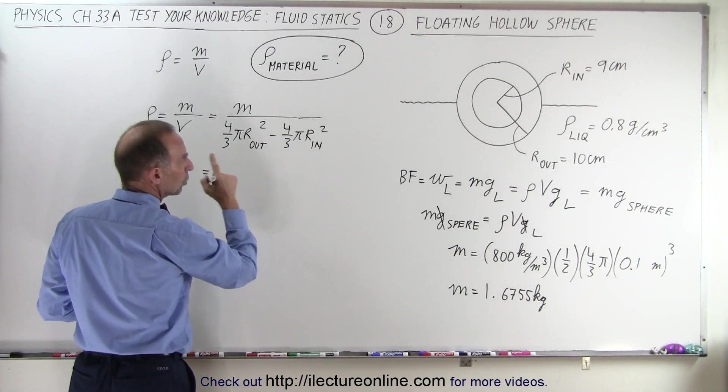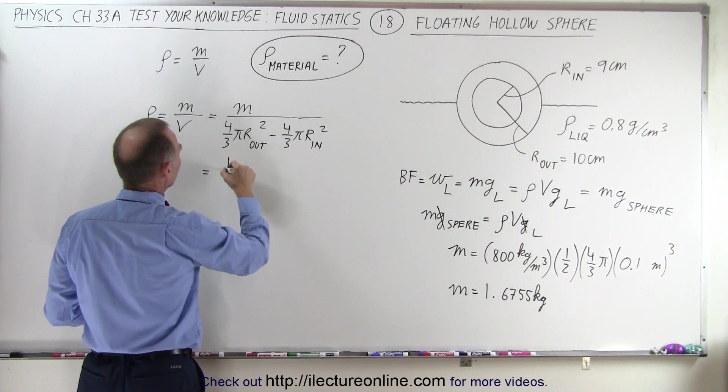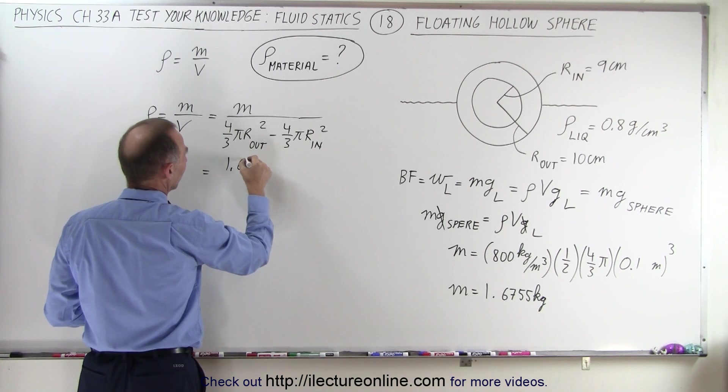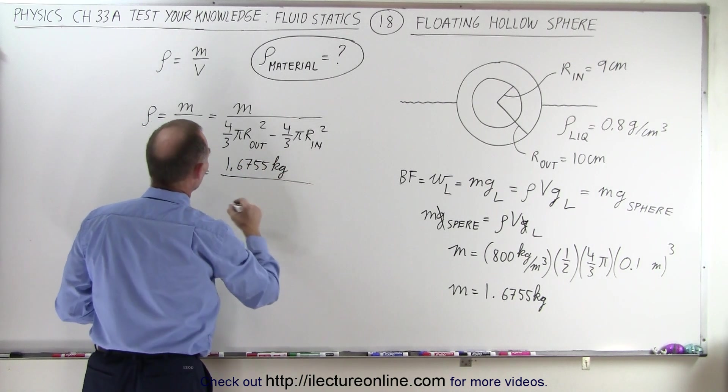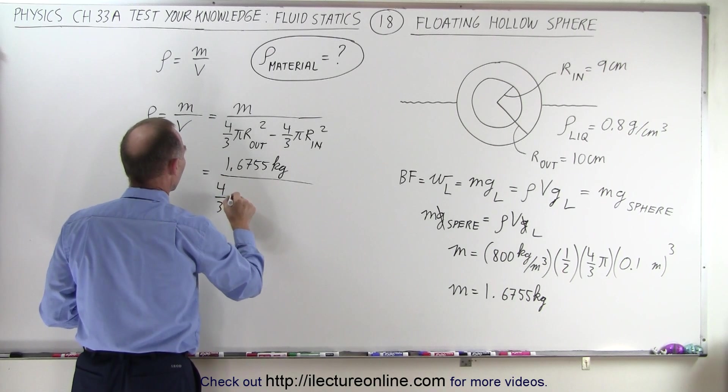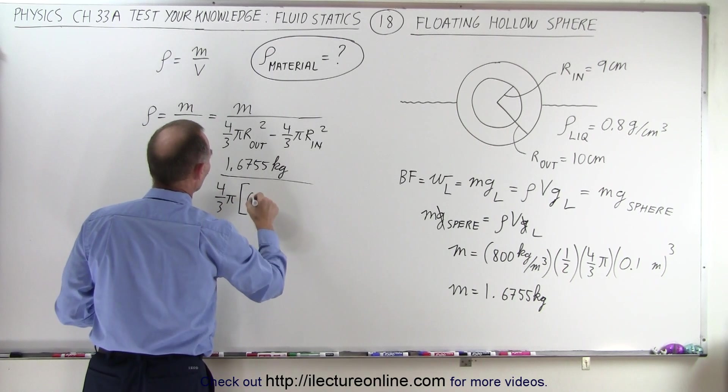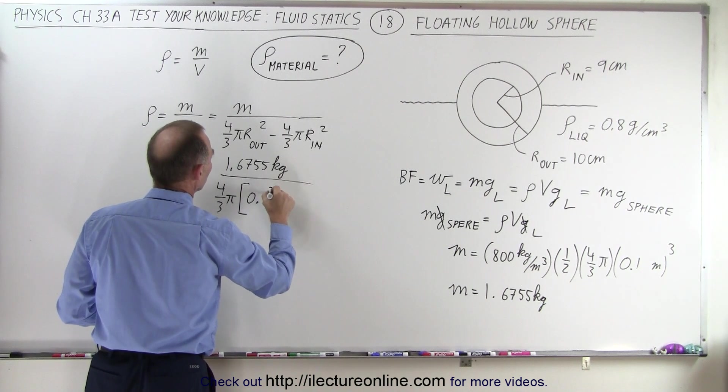So this is equal to the mass that would be 1.6755 kilograms divided by 4 thirds pi times 0.1 cubed minus 0.09 cubed.